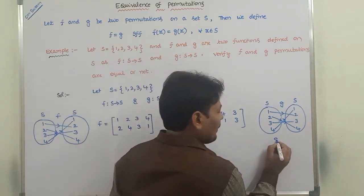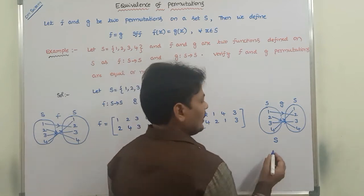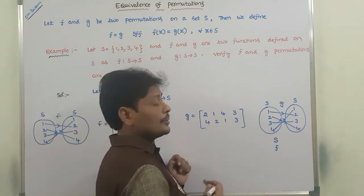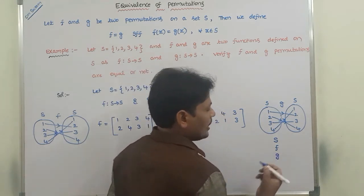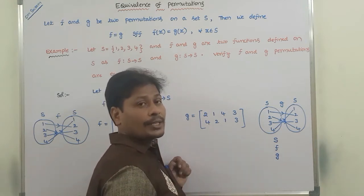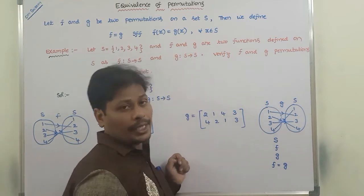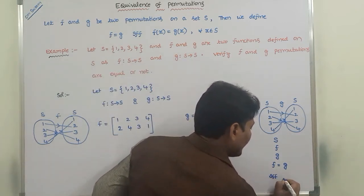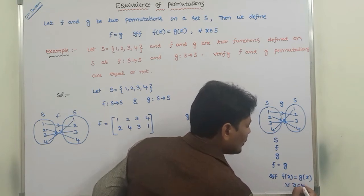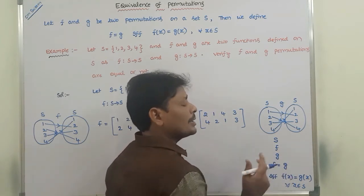Let S be a finite set containing a finite number of elements. F is one permutation defined on the elements of set S through function F. G is another permutation defined on the elements of set S through function G. The permutation F is equivalent to permutation G if and only if F(x) is equal to G(x) for all x belonging to S.